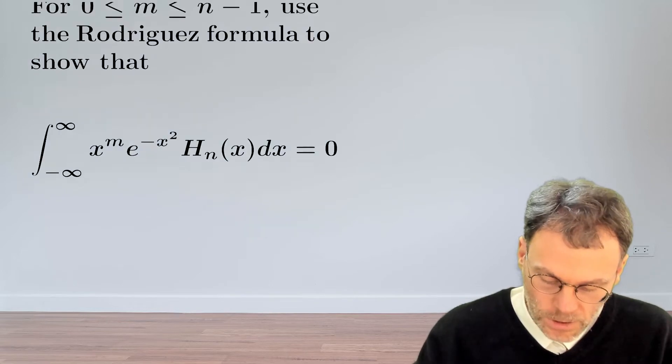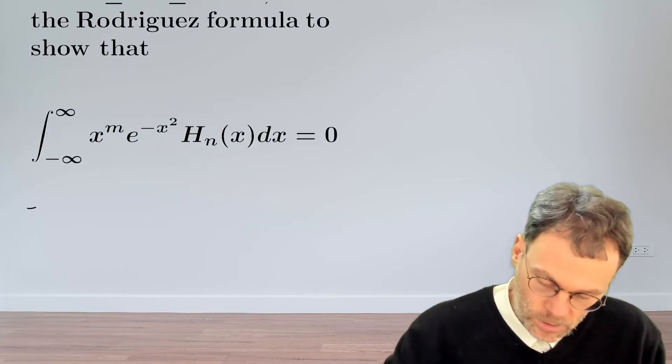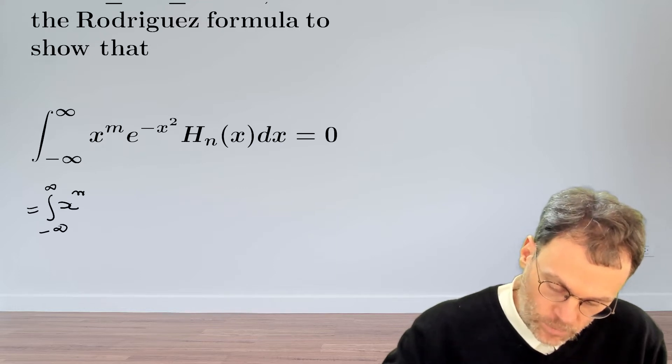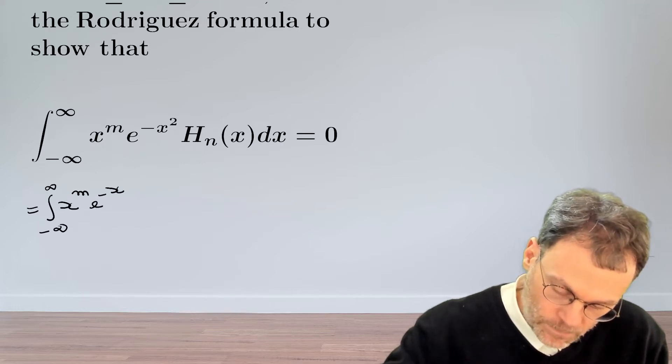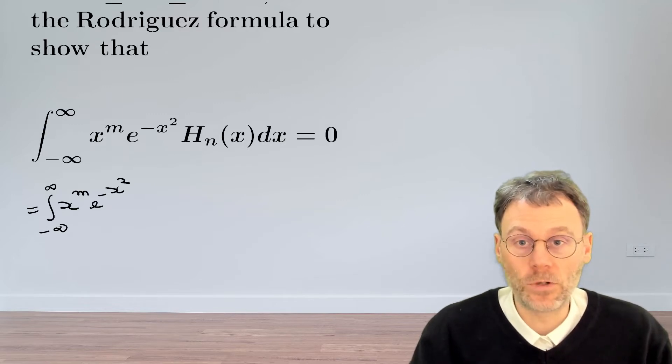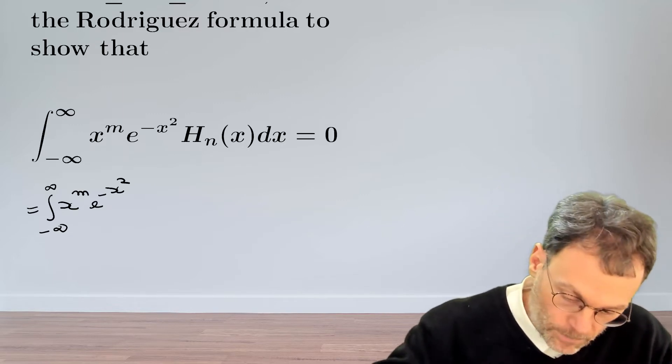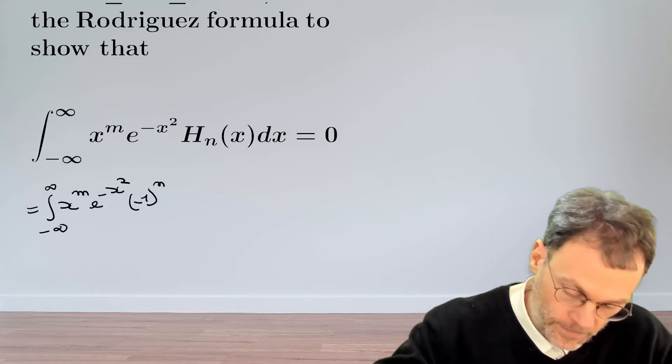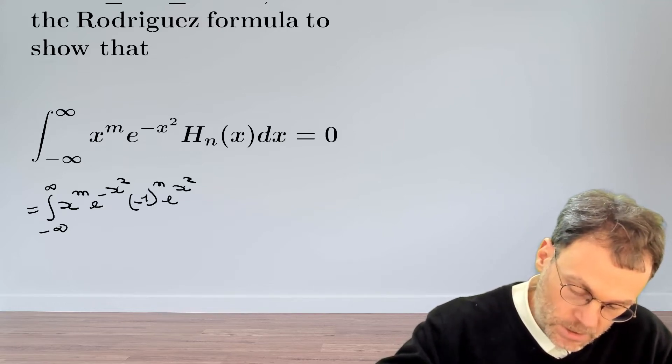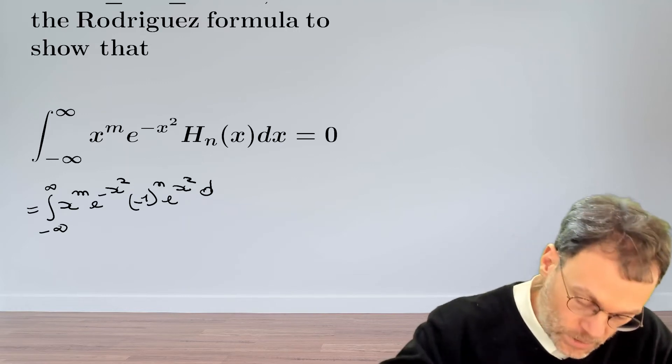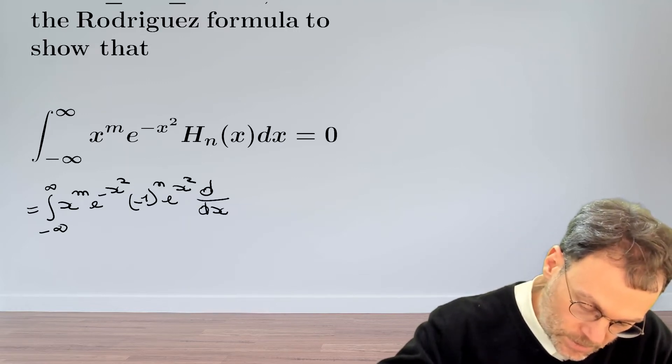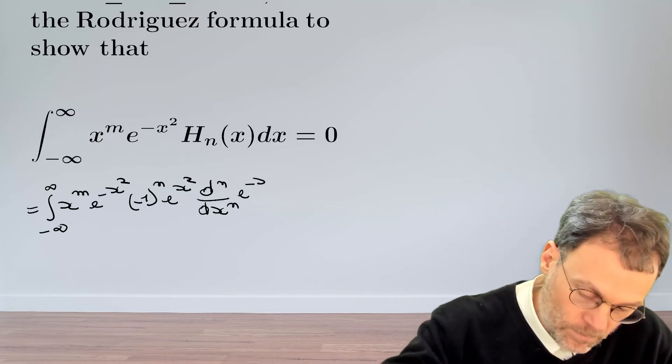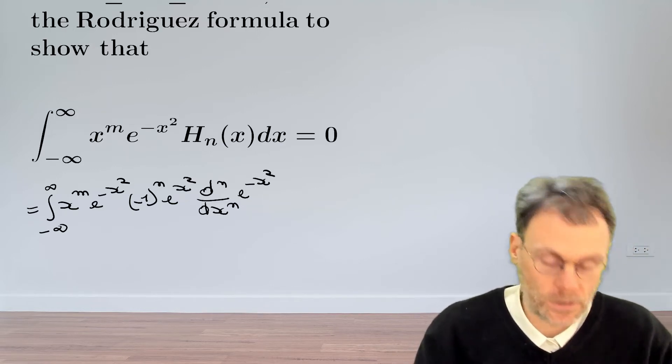Let's bring in the Rodriguez representation. Our integral becomes an integral from minus infinity to infinity x to the power of m exponential minus x squared. And then we can replace the Hermite polynomial of order n by minus 1 to the power of n exponential x squared, and then we take the derivative with respect to x n times of exponential minus x squared dx.